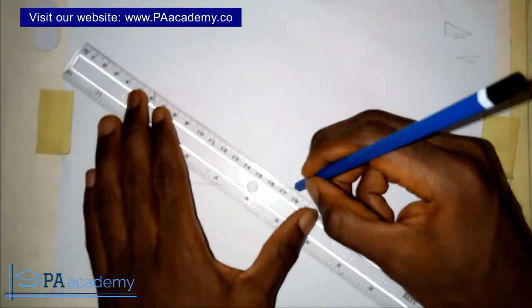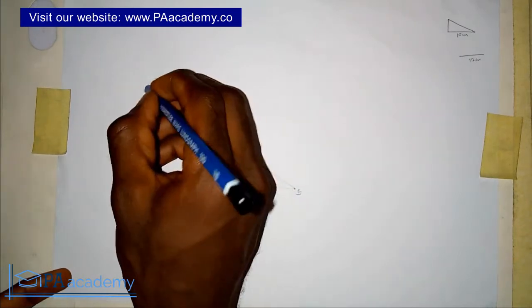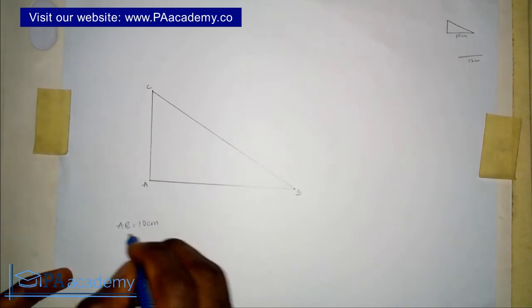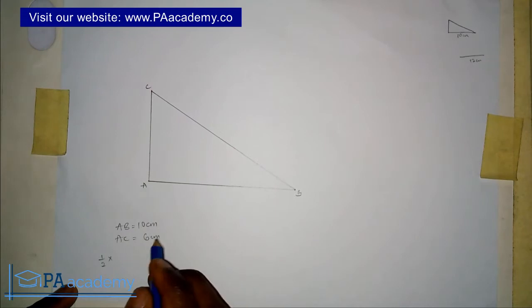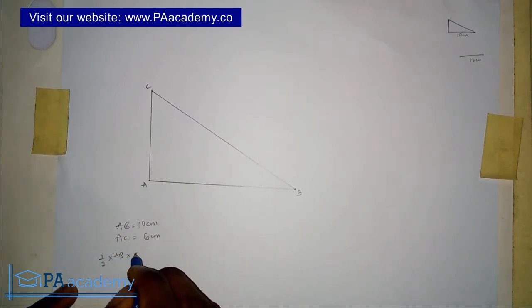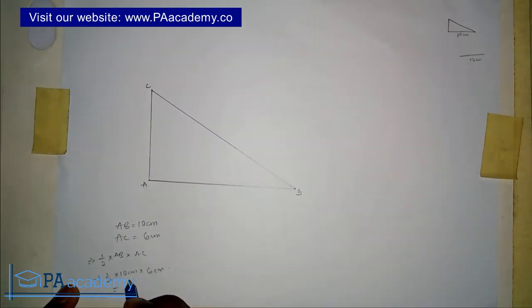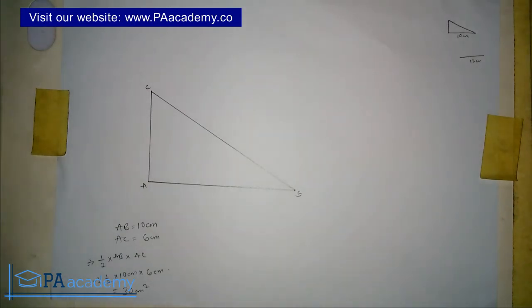Let's join this together. This is A, B, and C. So AB is 10 centimeters and AC is 6 centimeters. The area of a right angle triangle is half base times height, so that's one-half times AB times AC — one-half times 10 centimeters times 6 centimeters. That gives us 60 divided by 2, which equals 30 centimeters squared. So the area of triangle ABC is 30 centimeters squared.